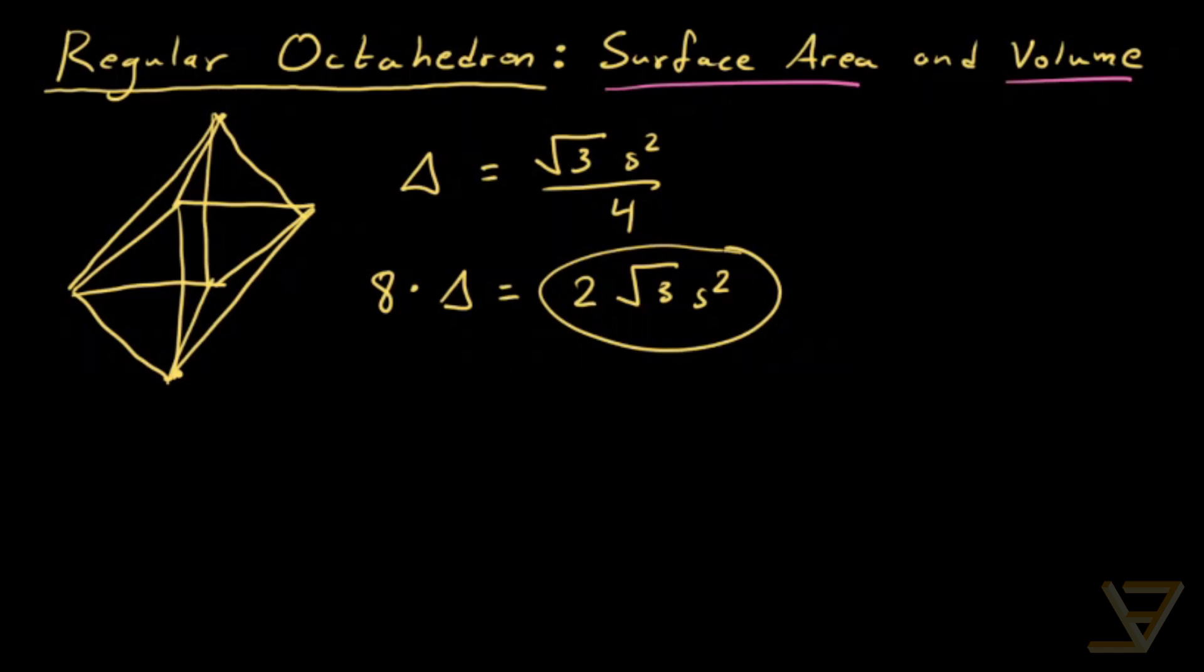The volume is a bit harder. What we have to do is analyze the anatomy of the diagonals of a square. So let's draw a square and then let's draw the diagonals.